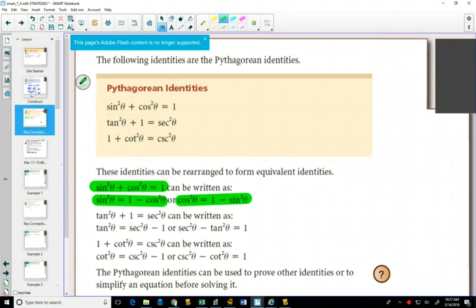I'll highlight all three of them in the same color. If sine squared plus cos squared equals 1, does it make sense that sine squared is 1 minus cos squared? And does it make sense that cos squared is 1 minus sine squared?